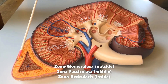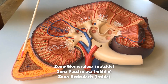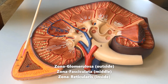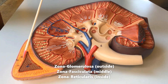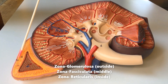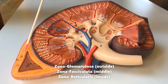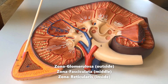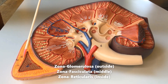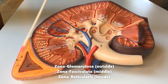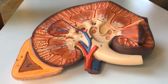which is on the outside, the zona fasciculata which is in the middle, and the zona reticularis which is on the inside. So from outside in, the mnemonic is GFR: zona glomerulosa, fasciculata, and reticularis.